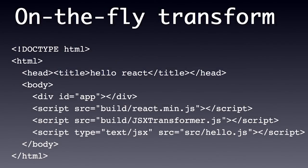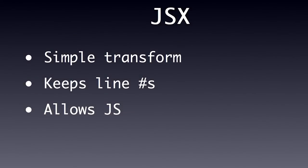For experimenting, you can do the JSX transform on the fly in the browser by including the JSX transformer and loading your scripts with an invalid type so they don't run directly — the transformer finds them and converts them to regular JavaScript. It keeps line numbers and also allows JavaScript inside, so you don't need a separate templating language. You can write conditions or loops inside the JSX.